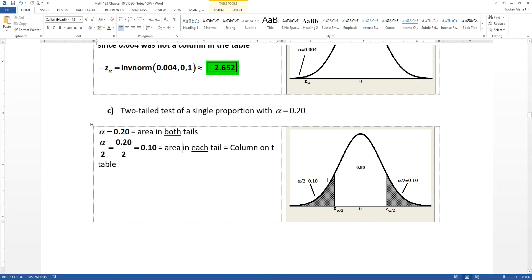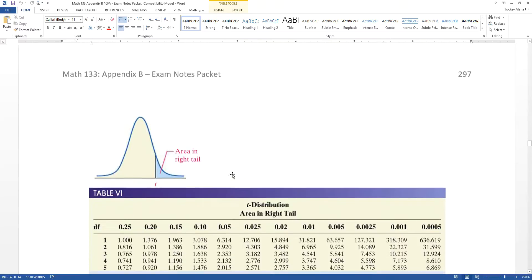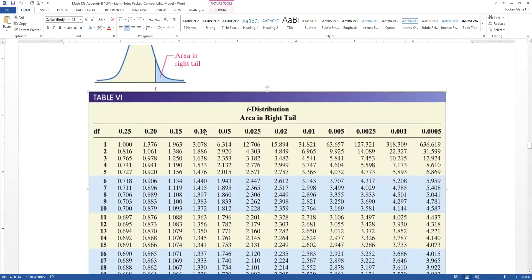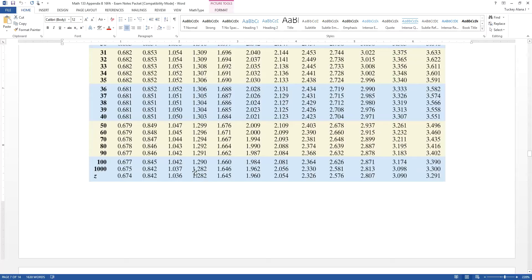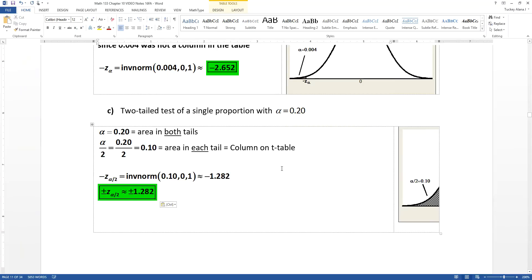Now 0.10 for each of the tails. Notice we have them each shaded at 10% and they're labeled with alpha over 2s. I've got the z alpha over 2, the negative z alpha over 2. All of that needs to be on there. Every last bit of it. You have to label, you have to point out areas are labeled above, z scores are labeled on the x-axis. Now this particular value is in the table. So we could use the table or we could use inverse norm, either one. When you think about the area in the tail, it's 0.10. So you want the 0.10 column, you want to scroll to the bottom to the z scores, and you can see that it's 1.282. That means that the z scores are plus or minus 1.282.